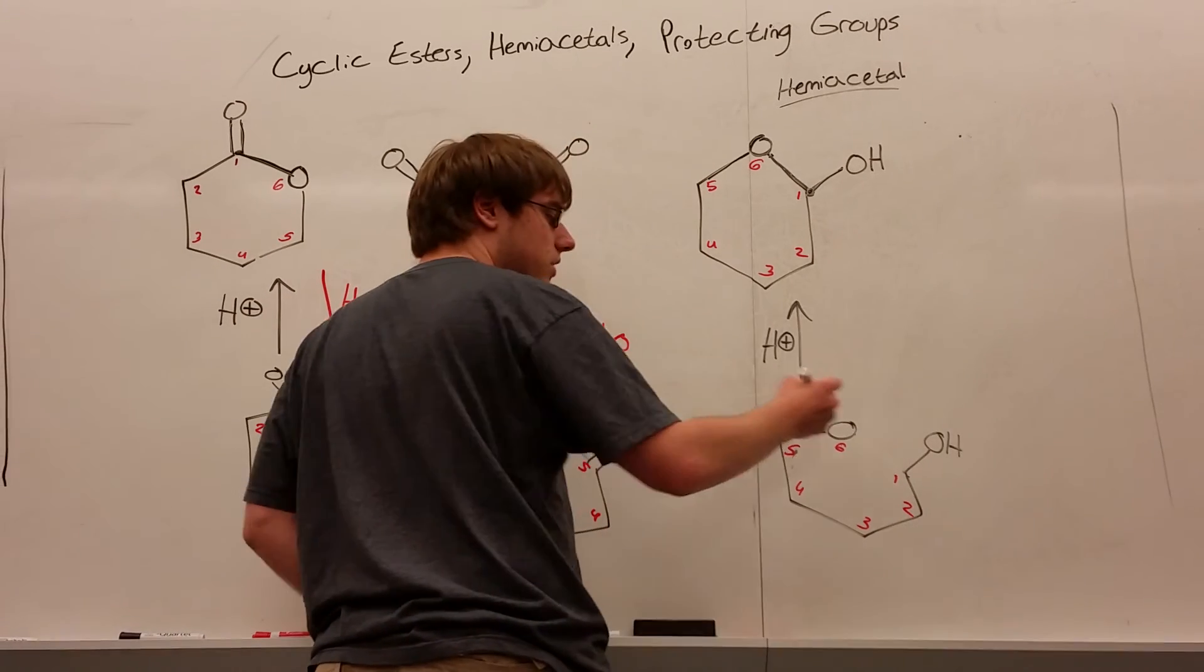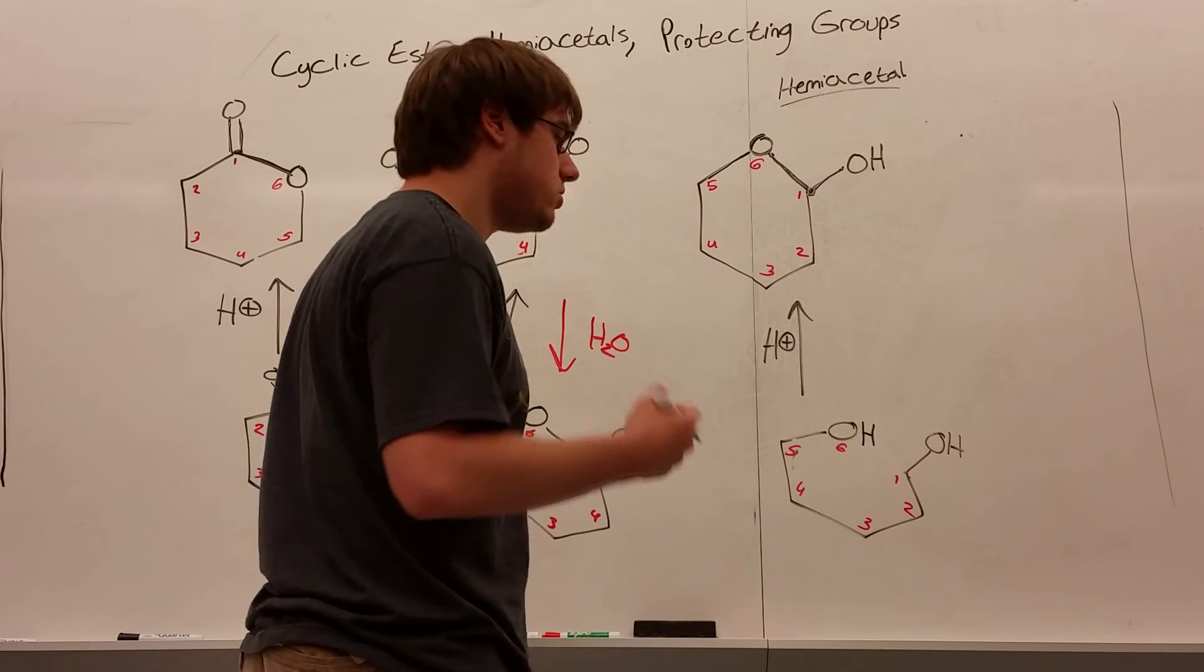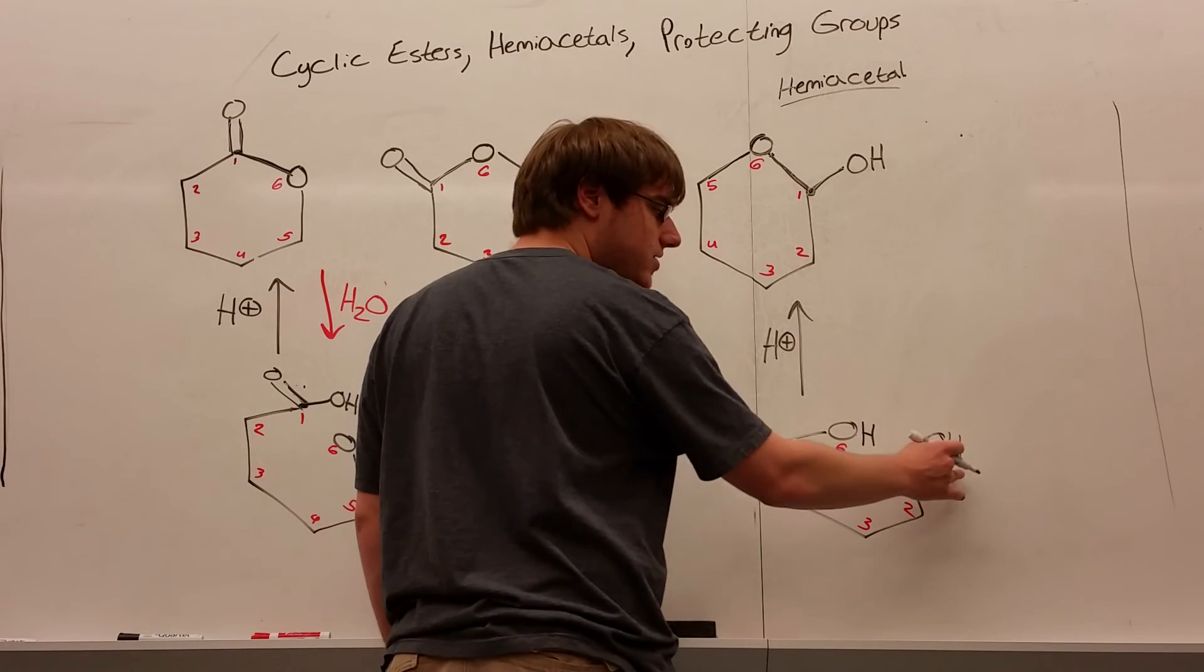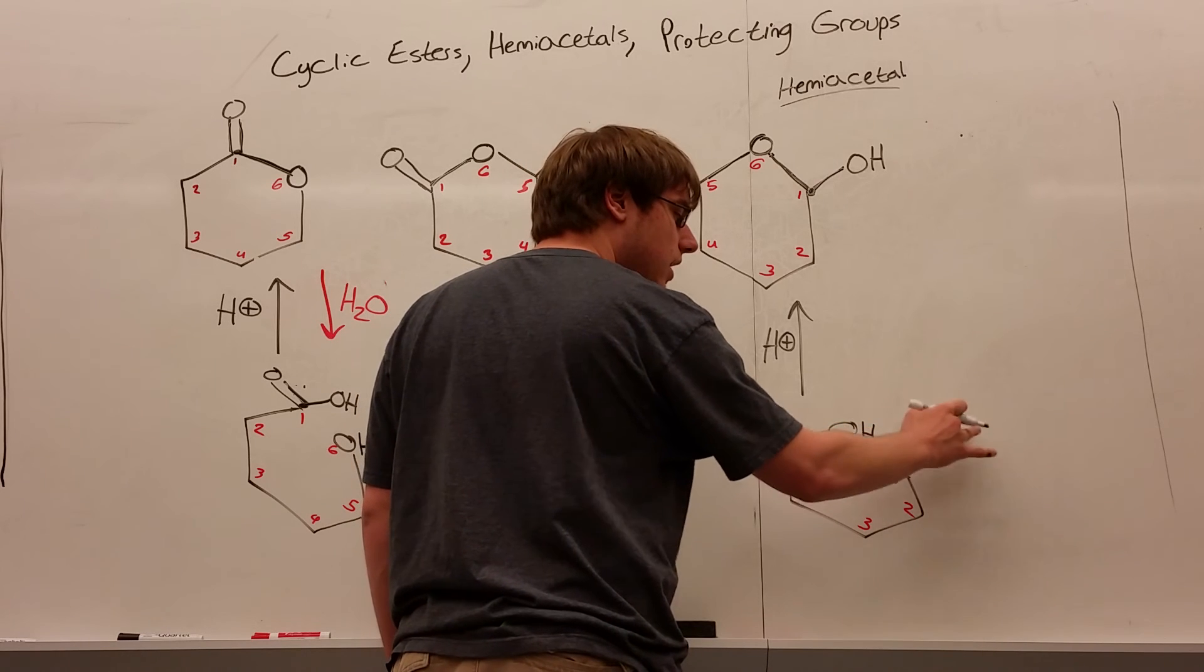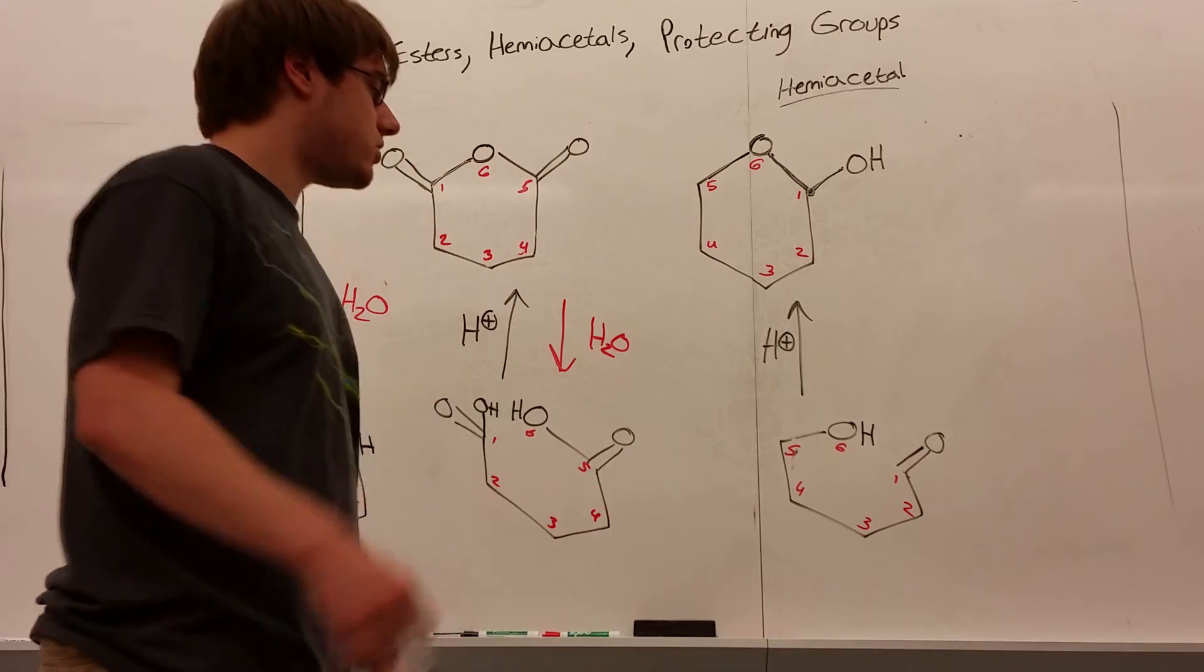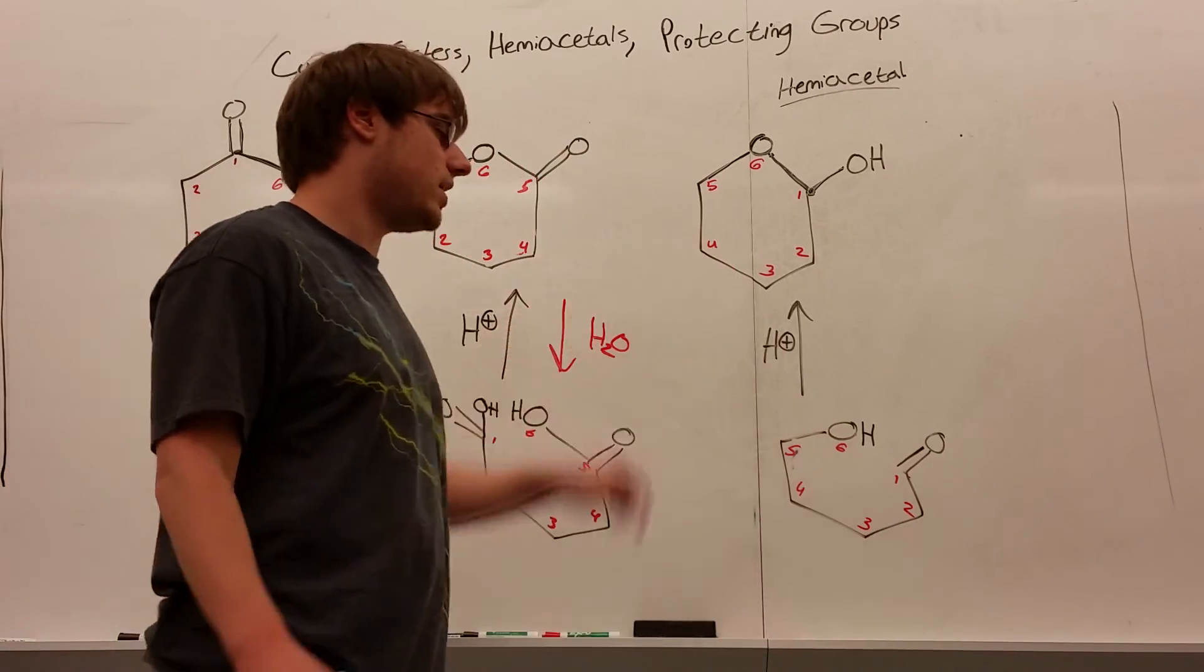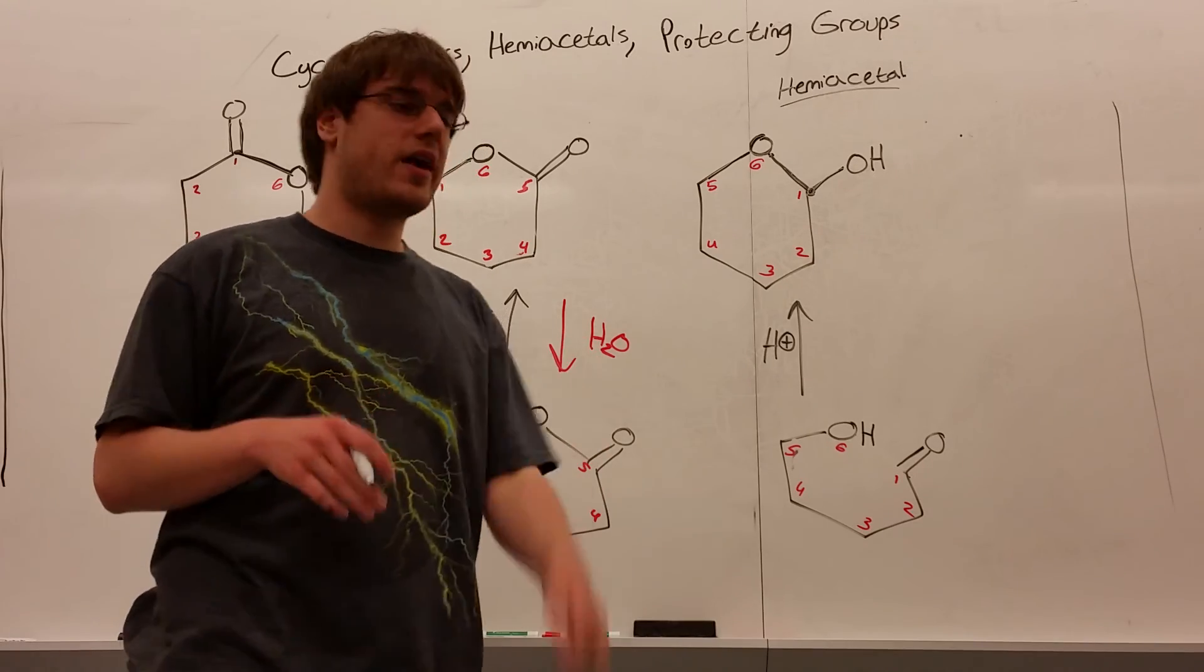But this time, and then that oxygen that was part of the ring will once again become an OH. But now what you're going to do differently is that carbon that has the OH, you're going to erase that hydrogen and make it now a C double bond O. So put a double bond there. And so this would be the two pieces that came, or this would be the thing that came together to make your hemiacetal.